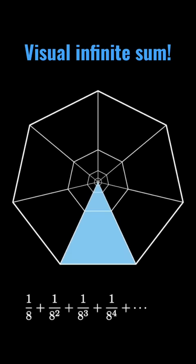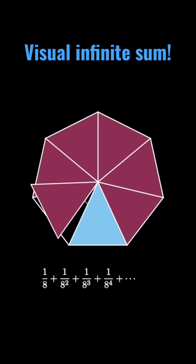But on the other hand, we see that in terms of the full picture, this shaded area is exactly 1/7th of the entire heptagon. Therefore, the sum of powers of 1/8th is equal to 1/7th.